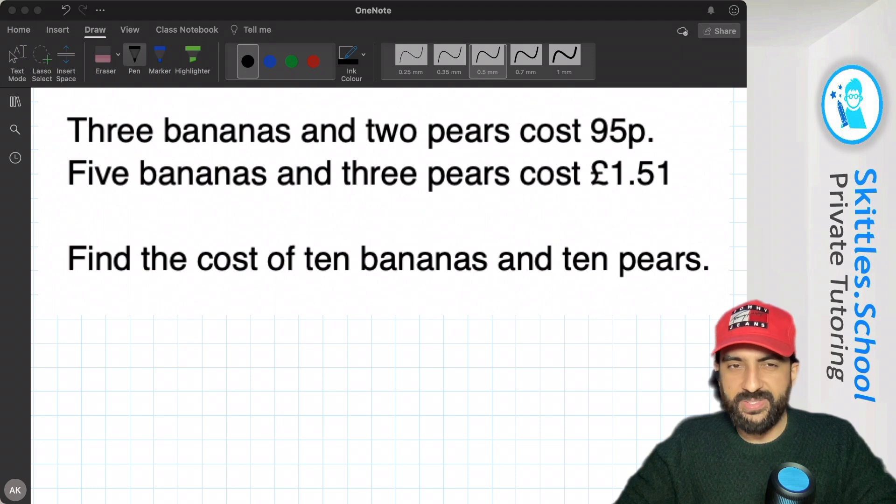Here's the question on our virtual whiteboard. It tells us that 3 bananas and 2 pears cost 95 pence. It also tells us that 5 bananas and 3 pears cost £1.51, and then it asks us to find the cost of 10 bananas and 10 pears.